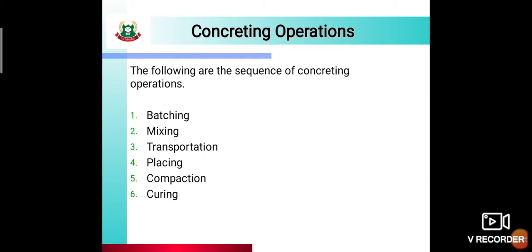So these are all the concrete operations one by one: first is batching, then mixing, then transportation, then placing, then compaction, then curing and finishing. Most of the time the question is to state the concrete operations in sequence. You can see all of them sequence-wise — first is batching.